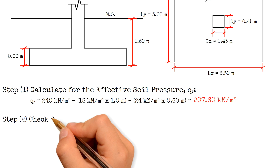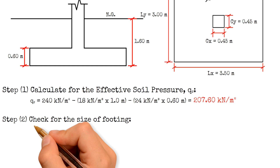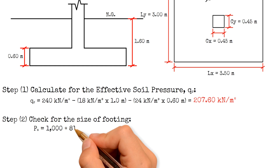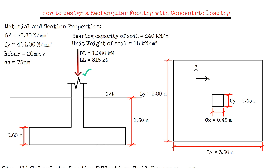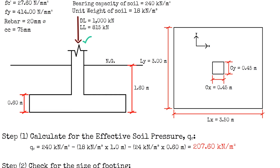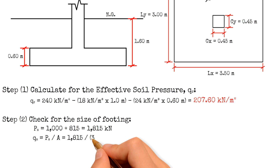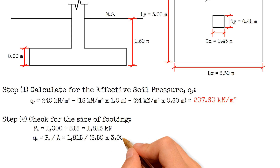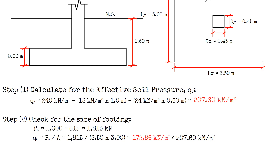The second step is to check if the assumed size of footing is safe. We get the actual load as the sum of dead load and live load, which gives 1815 kN. Since our design is concentric loading, all loads act on the center of the footing and eccentricity E equals zero. Dividing 1815 kN by the footing area (3.5 m × 3 m) gives 172.86 kN/m². Since 172.86 kN/m² is less than the effective soil pressure of 207.6 kN/m², the assumed dimension is safe.